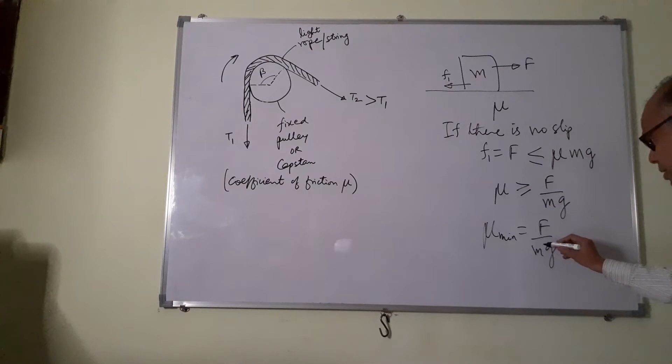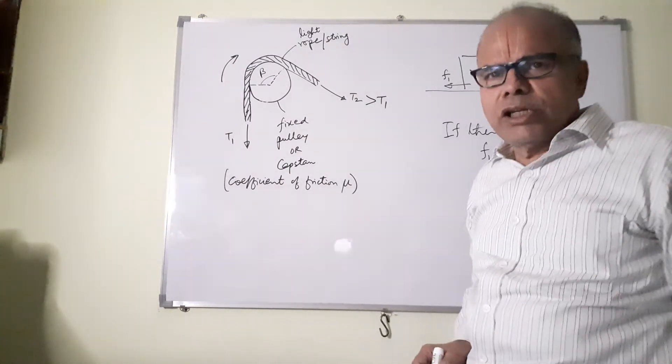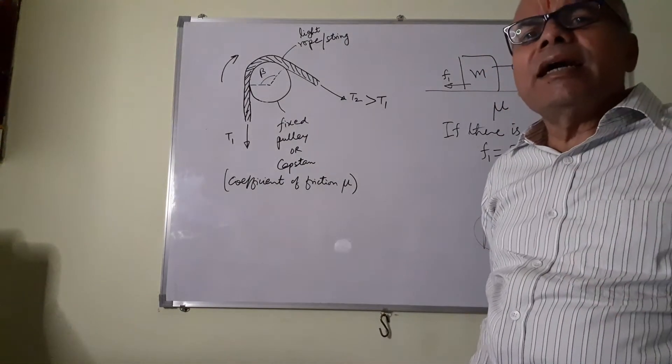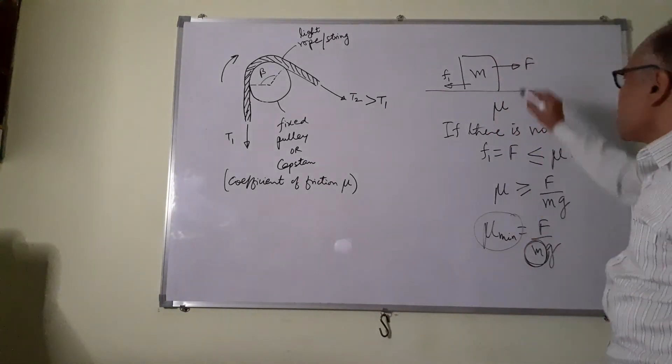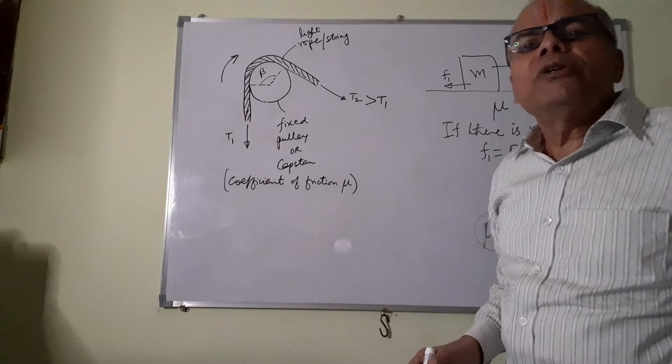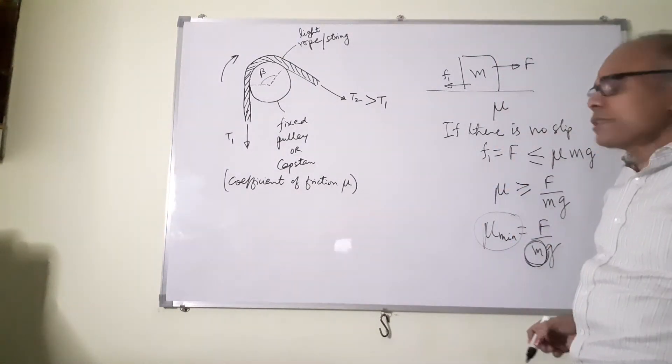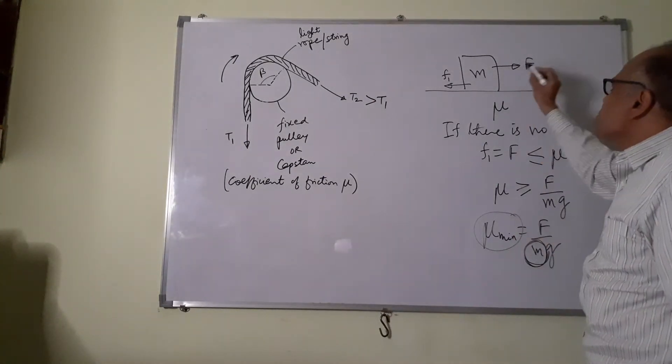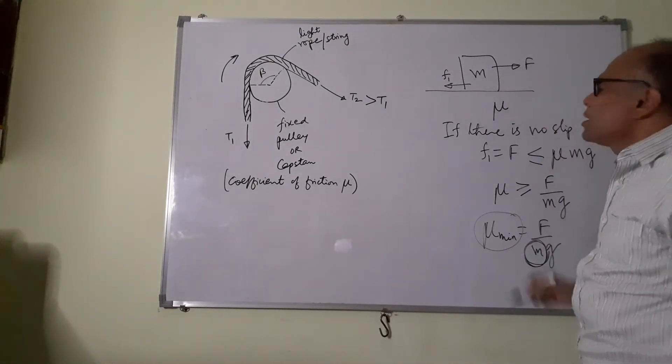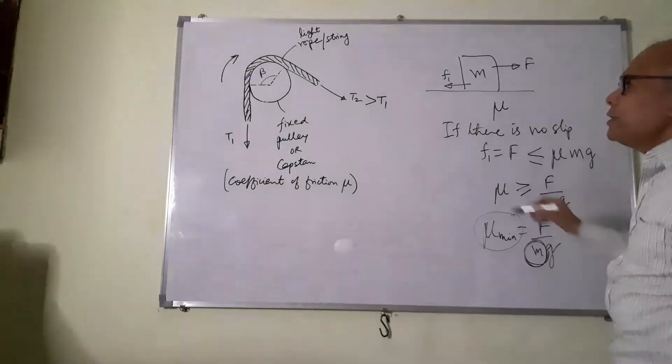Now we will easily see that if M is very small, it is in the denominator. So mu minimum, the minimum mu required for no slip gets exceedingly large, and the surface, however rough, may not be able to match that minimum mu if the mass M is very less. So even if a small force is applied, it will necessarily slip.